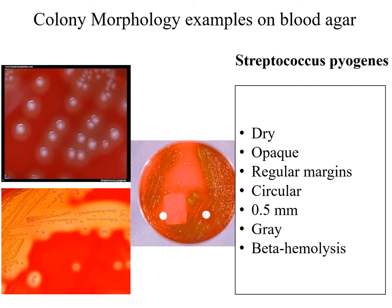Streptococcus pyogenes, or Group A Strep: the colony is dry, opaque, with regular margin, circular, 0.5 mm in diameter, grayish-whitish in color, and it is characterized by being beta-hemolytic. So it is sometimes called Group A beta-hemolytic Strep.